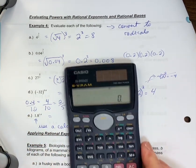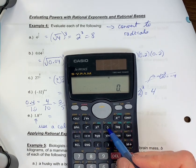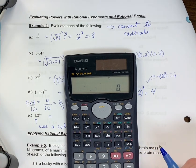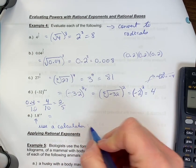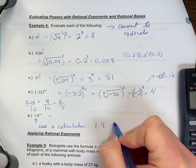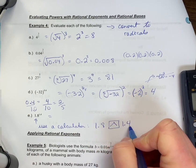So on your calculator, there's a couple options. My calculator, it's going to be this symbol right here. We call it the caret symbol. So in my calculator, I would type 1.8, I would hit that button and then type in 1.4.